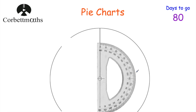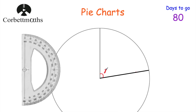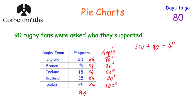80 degrees is there. We do a little dot and take our protractor away, then draw a line from the center through that dot to the edge of the circle. I'm going to mark that as an 80 degree angle and label it England. You don't have to put the angle in, but you do have to label each sector. Next it's France, which is 20 degrees.